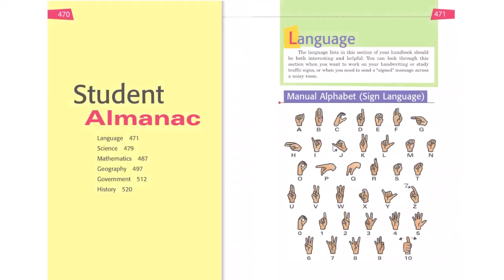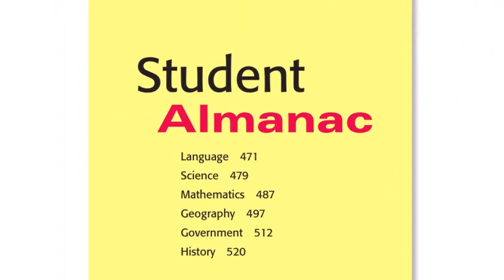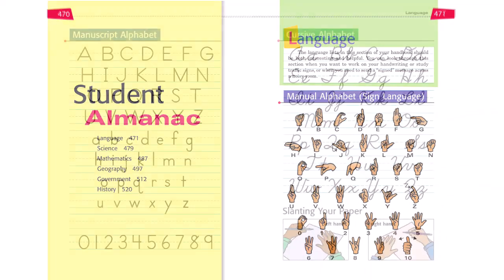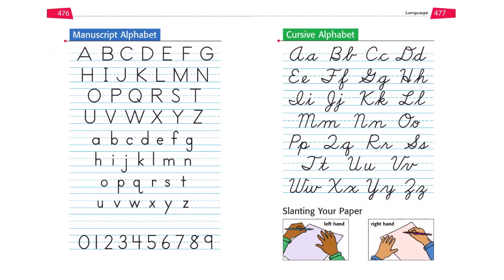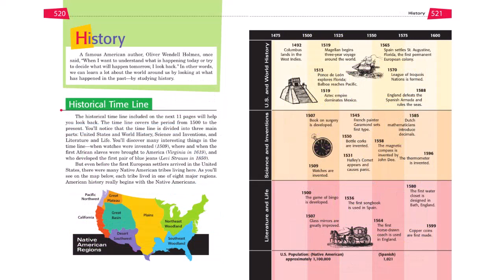Now let's take a quick look at the student almanac. It includes high interest pages on language, science, mathematics, geography, government, and history. Students might want to learn the manual alphabet. They can also practice manuscript writing and cursive writing. This page shows the three branches of the federal government, as well as all the members of the president's cabinet. This page introduces the history of the United States, with a timeline that looks at literature and life, science and innovations, and U.S. and world history.